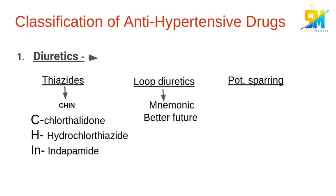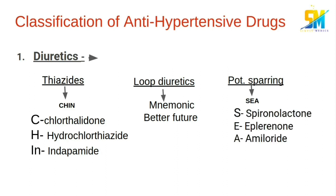We can remember loop diuretics by the mnemonic 'better feature drugs', which we have discussed in the video of diuretics part 2. We can remember the potassium-sparing drugs by mnemonic C: spironolactone, eplerenone, and amiloride.